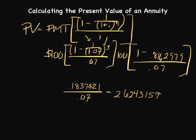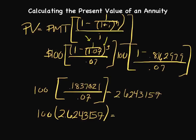The last thing that we have to do is multiply that by 100. So 100 multiplied by 2.6243157 actually equals, coincidentally, $262.43.